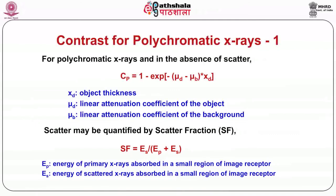For polychromatic X-rays and in the absence of scatter, the contrast denoted by C_p is equal to 1 minus exponential of minus (mu_d minus mu_b) times X_d. Here X_d is object thickness, mu_d is the linear attenuation coefficient of the object, and mu_b is the linear attenuation coefficient of the background. Scatter may be quantified by a scatter fraction: SF is equal to ES upon (EP plus ES), where EP is the energy of primary X-rays absorbed in a small region of the image receptor and ES is the energy of scattered X-rays absorbed in a small region of the image receptor.